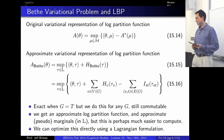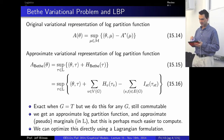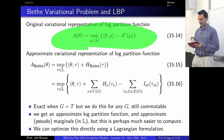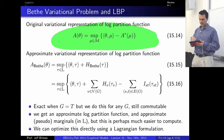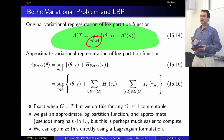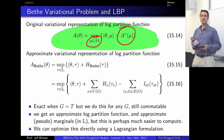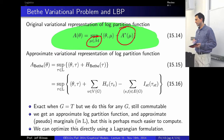Just to remind you where we are: we have the dual representation of the log partition function. What we're doing is either approximating the mean parameters, which in the case of a discrete graphical model can be represented as a polytope — in the over-complete case it's called the marginal polytope — and also the dual, which we saw to be the negative entropy.